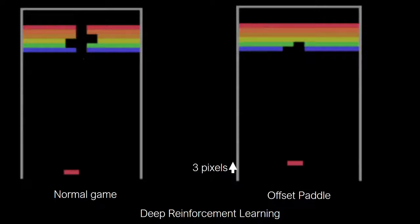But on the right-hand side is the same system playing the game when you move the paddle by three pixels up. So you can see that it's not able to play the game. It is missing the ball most of the time. You probably can't see the ball on it. But just trust me, it's missing it. So that's another modern day version of it.